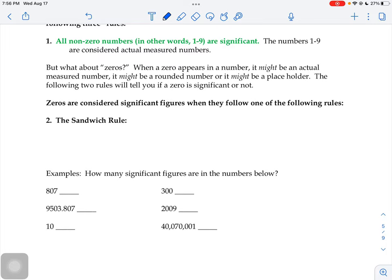The first one I call the sandwich rule. The sandwich rule says if a zero is sandwiched between two significant figures, then that zero is also significant, meaning it was actually measured, somebody took the time to figure out that there was a zero there in a measurement.